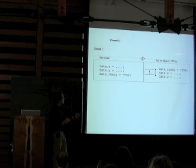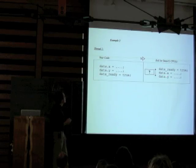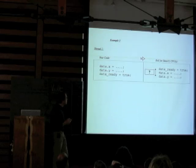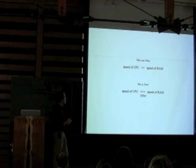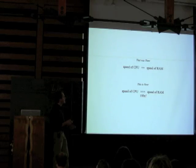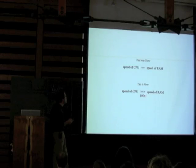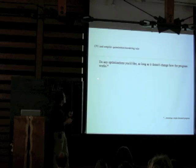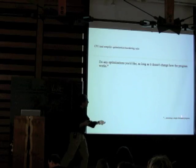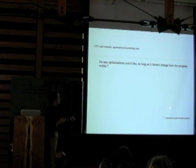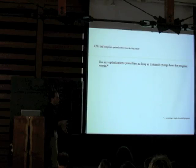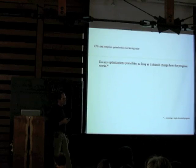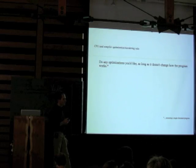Here's your code from thread one that sets the data, and here's what the evil CPU does to you: it decides to reorder those memory assignments. Why? Once upon a time the CPU and RAM ran at the same speed, but now the CPU runs 100 times faster than RAM. So the CPU doesn't want to wait around for memory accesses. The basic rule for both the CPU and the compiler is: do any optimizations you like, as long as it doesn't change how the program works — but the fine print says this assumes a single-threaded program.